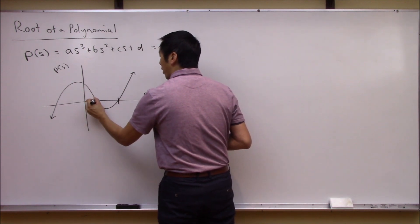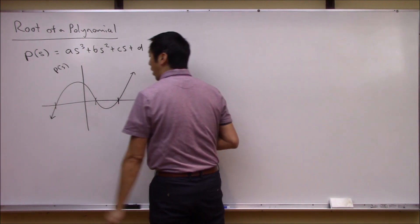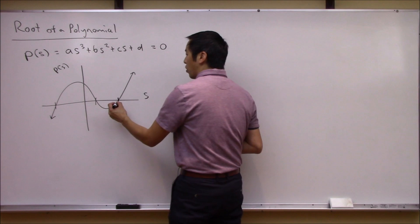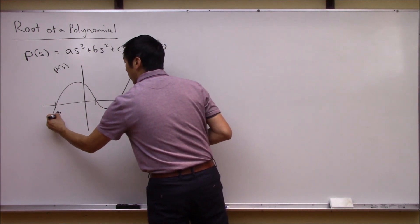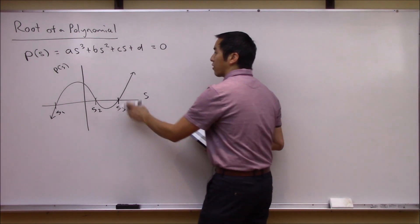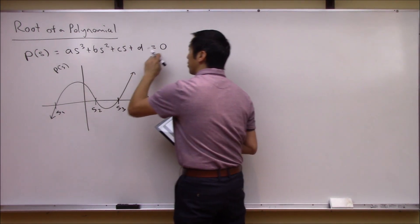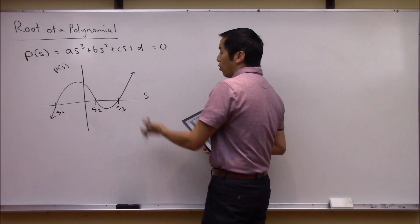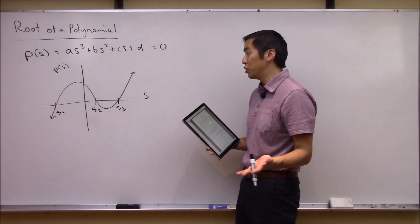All I'm looking for are the values of s where it crosses y equals zero. So these values of s, let's call this s1, s2, and s3, these would be the roots because those are the values of s that when you plug it into this polynomial you get zero.